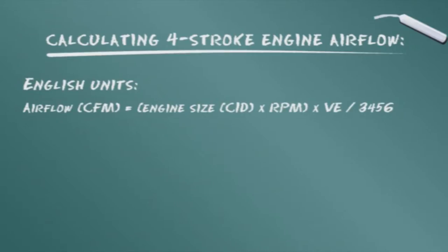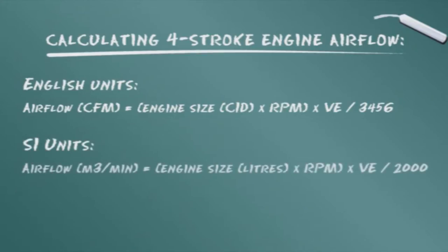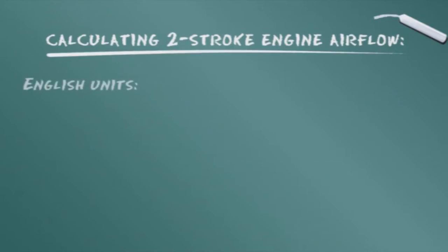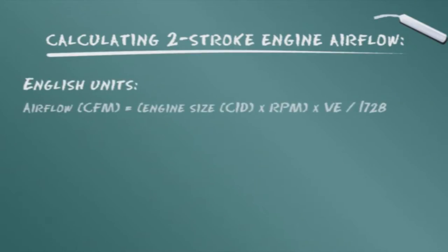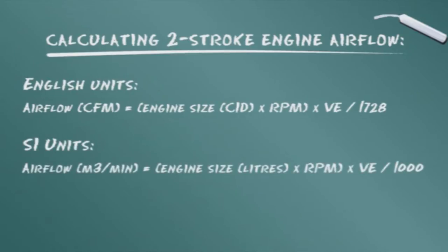This formula for four-stroke or four-cycle engine airflow calculation is expressed for both English and international SI units. In a moment, we'll give you a table from which you can choose a value for VE, which is volumetric efficiency. The formula for two-stroke or two-cycle diesel engines in English or SI units also requires a value for volumetric efficiency.